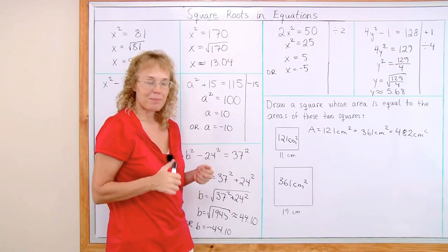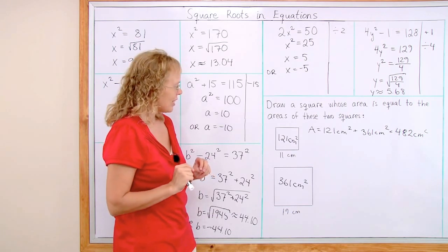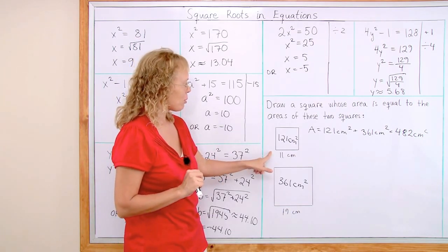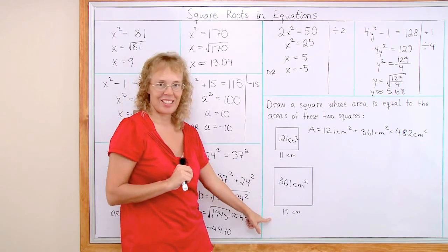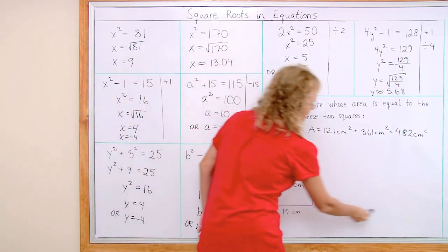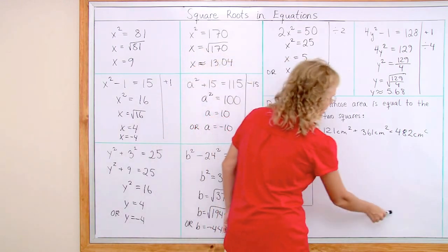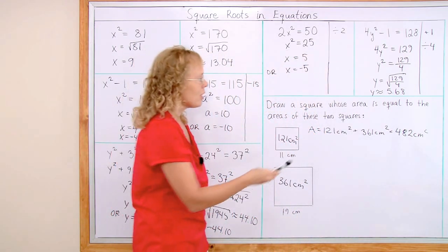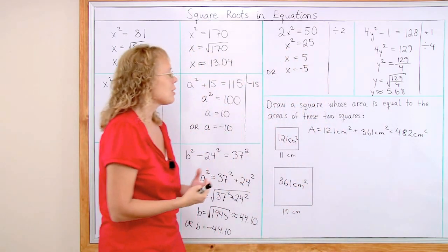And so now what? Let's start. And before we go any further, some students might guess that the square we are supposed to draw will have a side length of 11 plus 19, or 30 centimeters. 30 times 30. But you can see that would be wrong because 30 times 30, the area would be 900 square centimeters. And we have already found out that the area has to be 482 square centimeters.